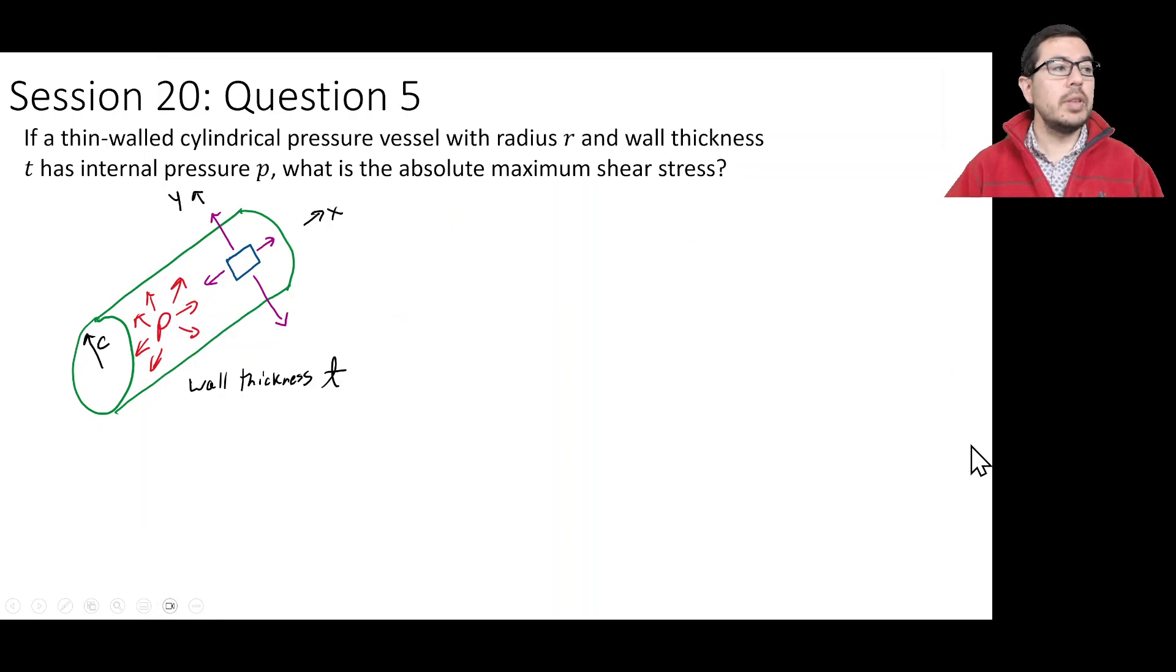This question states, if a thin-walled cylindrical pressure vessel with radius r and wall thickness t has internal pressure p, what is the absolute maximum shear stress? Well, once again, we are dealing with a state of principal stresses. These states of principal stresses make drawing Mohr's circles pretty simple and allow us to calculate out the absolute maximum shear stress pretty quickly.